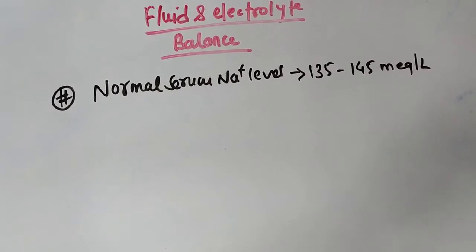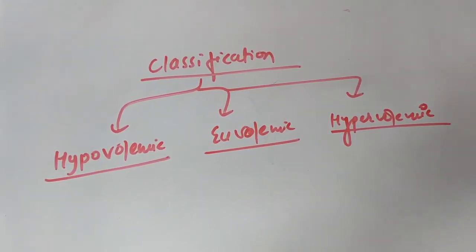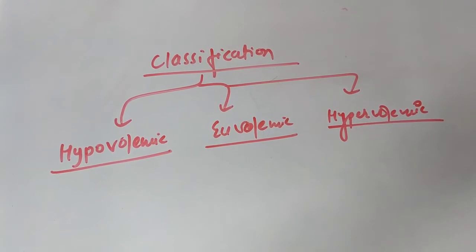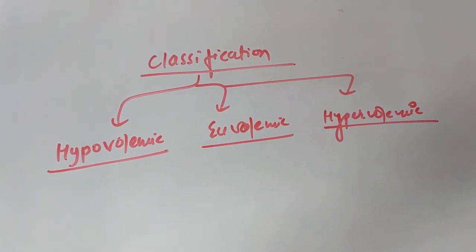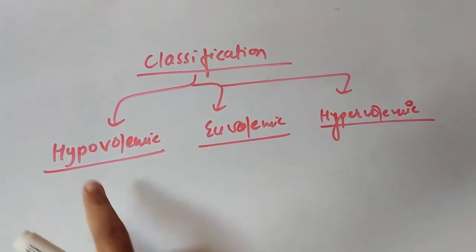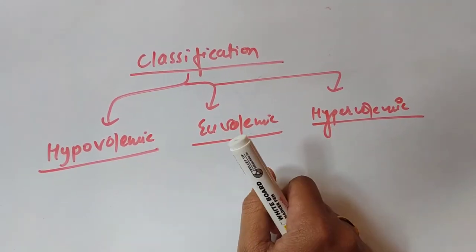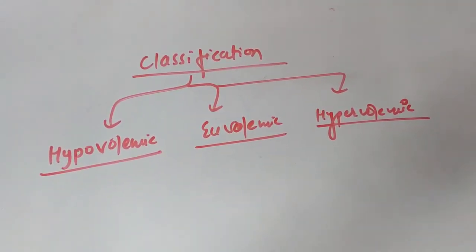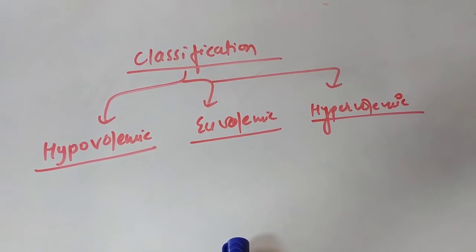Hyponatremia is basically classified into three types: hypovolemic hyponatremia, euvolemic hyponatremia, and hypervolemic hyponatremia. We will discuss each type in great detail.